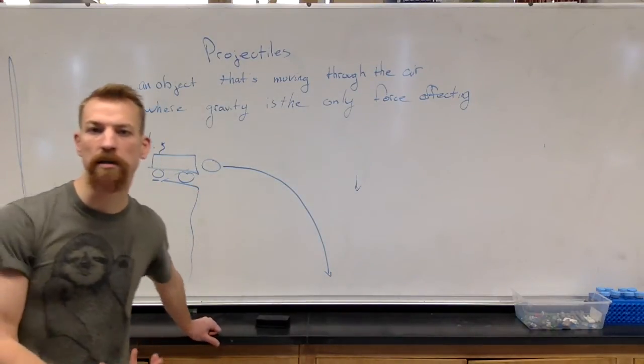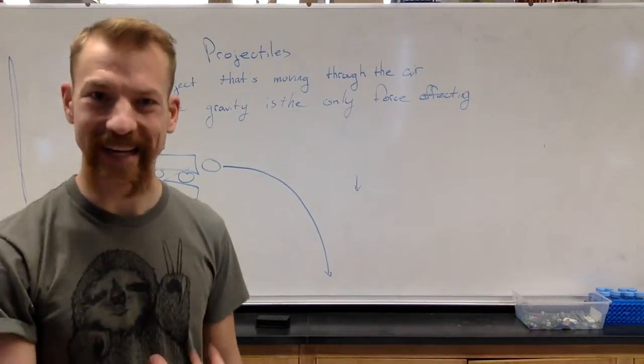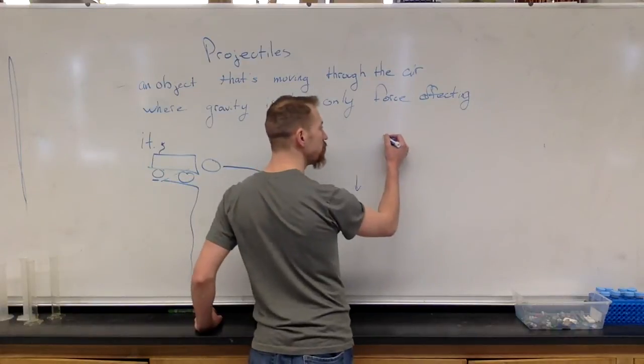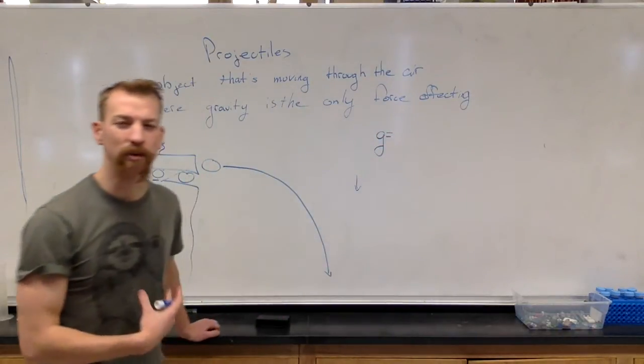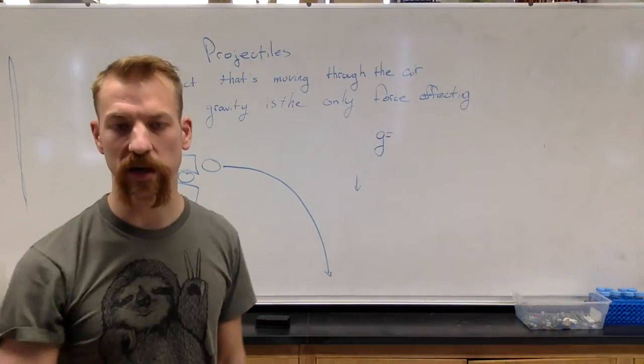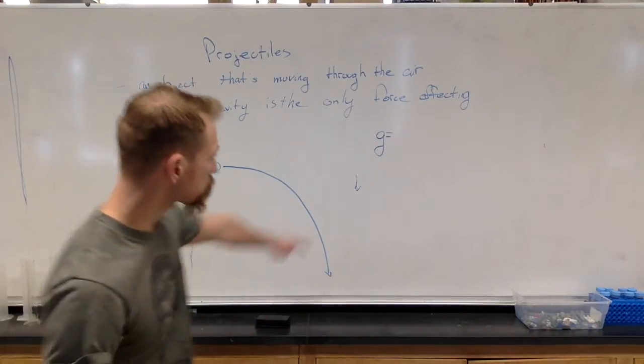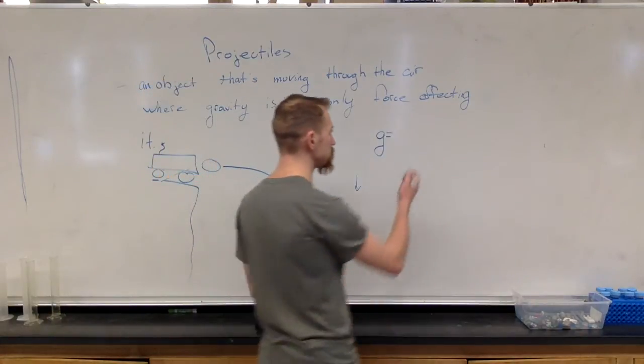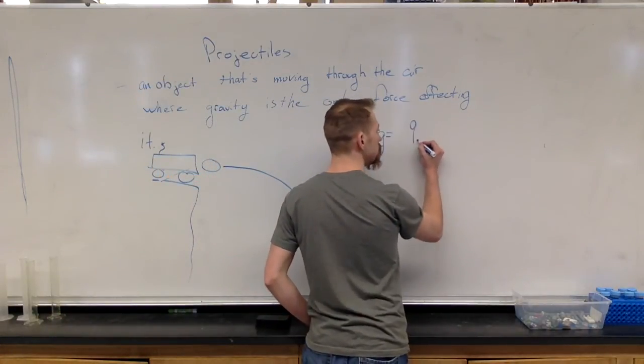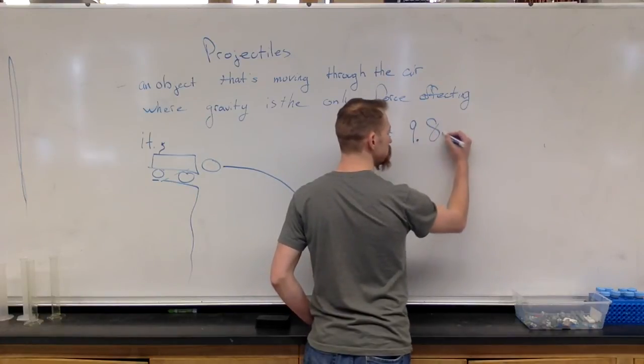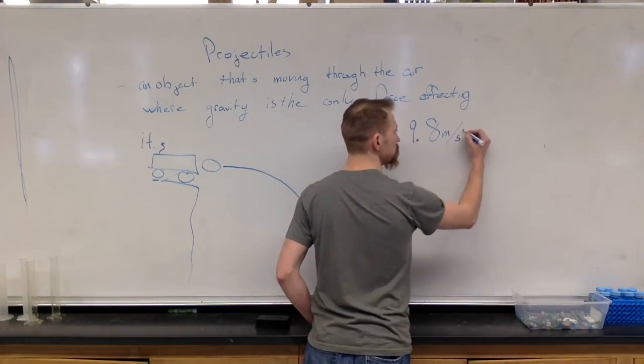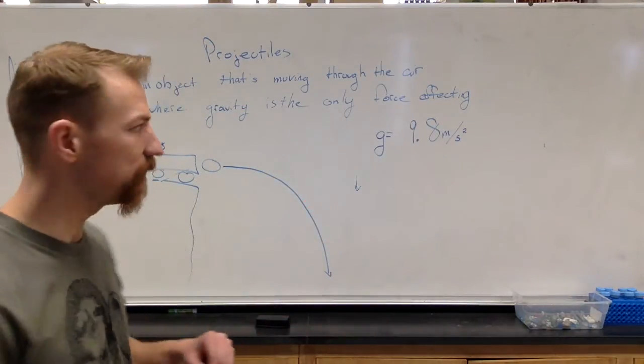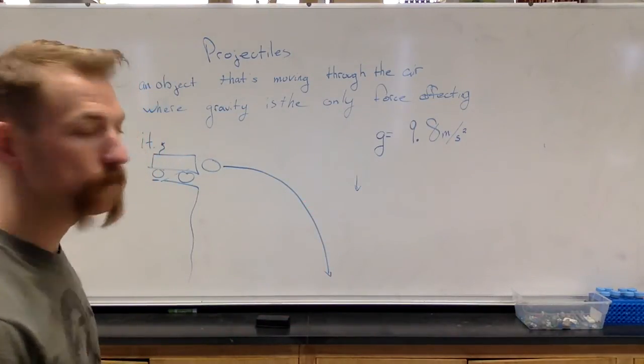Because we have this unbalanced force, gravity, we also have some acceleration downward. And the acceleration downward is always going to be the same for every object on Earth. And we talked about why that is when we talked about Newton's Three Laws. Gravity for every object, the acceleration due to gravity for every object on Earth, is 9.8 meters per second squared. Meaning that it increases its speed downward by 9.8 meters per second every second.